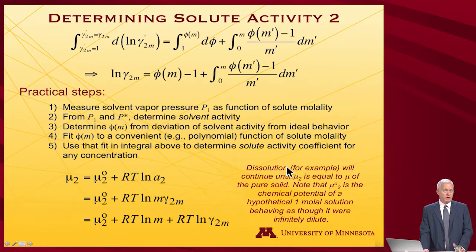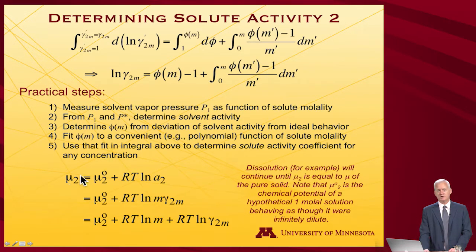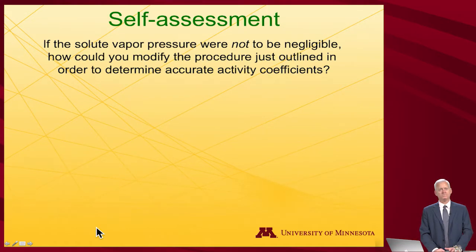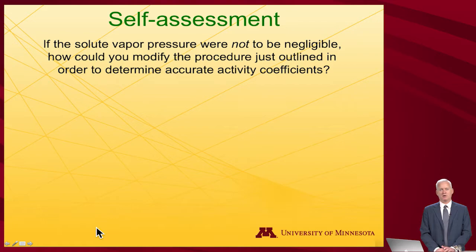Knowing that, dissolution of a solute would continue until μ₂ equals the chemical potential of the pure solvent. The μ₂° term is the chemical potential of that hypothetical one-molal solution behaving as though it were infinitely dilute. Now, consider this question: what if the solute vapor pressure isn't zero — that is, it has some effect on the measured vapor pressure in that device? What would you modify in order to determine accurate activity coefficients?